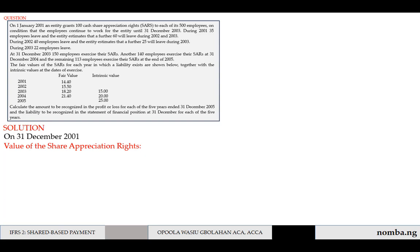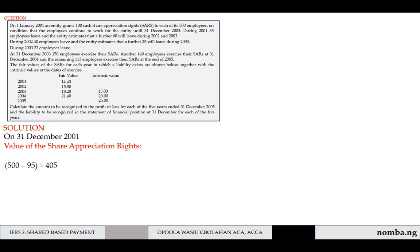For 2001, we need to get the value of the share acquisition rights. In 2001, 35 employees left and the entity estimates a further 60 will leave during 2002 and 2003, so the total expected to leave is 95. Therefore, the value of the SARs at end of 2001 is: (500 − 95) × 100 SARs × fair value of 14.40 = 405 × 100 × 14.40 = 583,200.